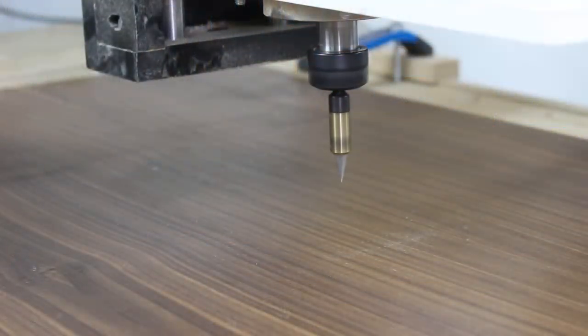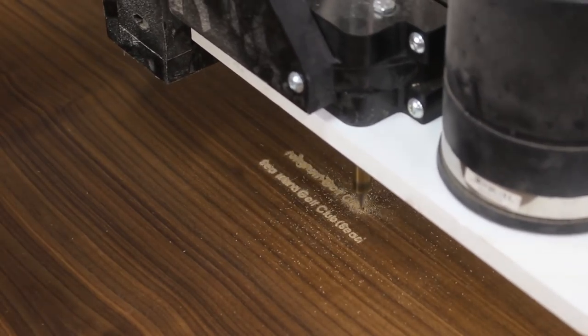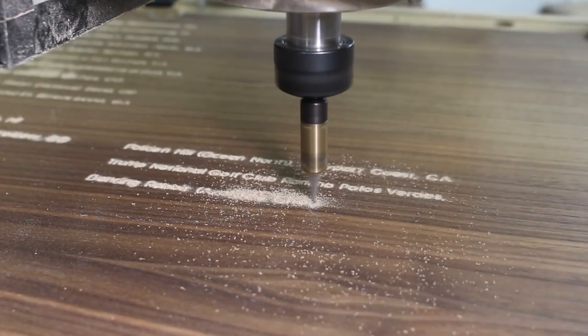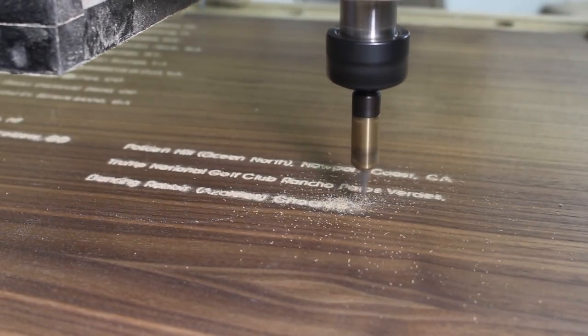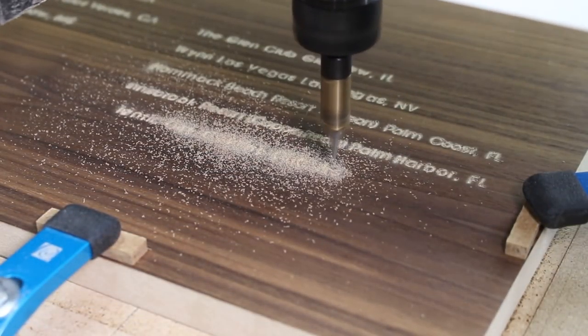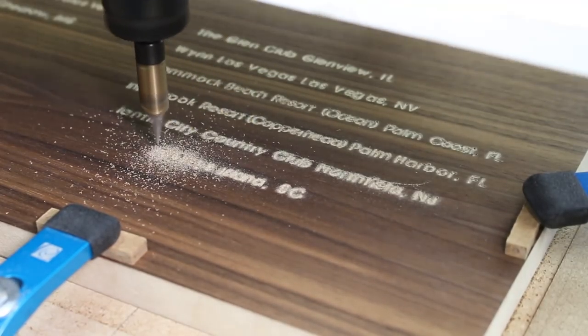Zeroing off the Z axis with a 30 degree engraving V-bit, I hit start on the course name engraving program. It is truly a treat to have a CNC, especially with projects like this that you really get an appreciation for the precision and accuracy of a CNC machine.